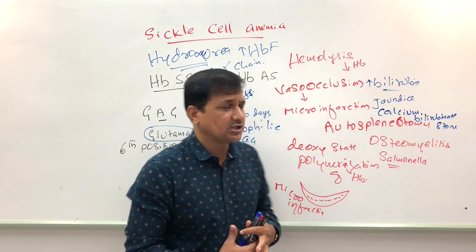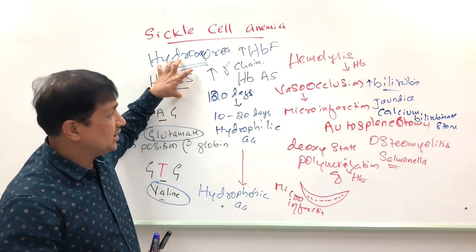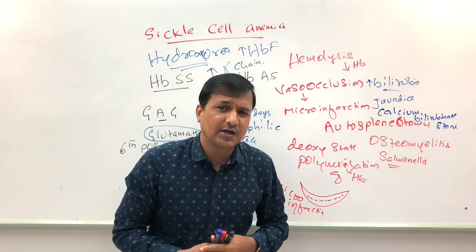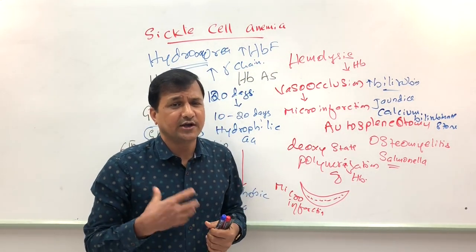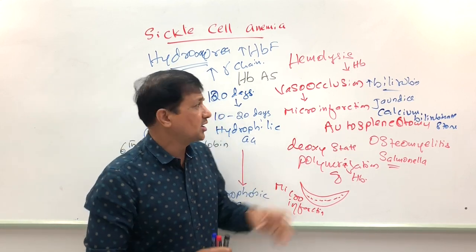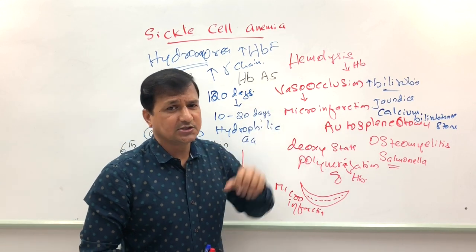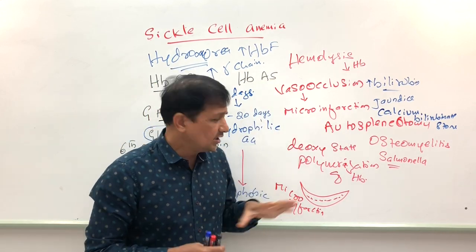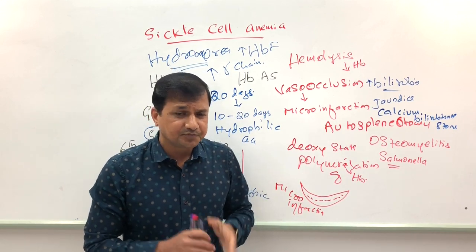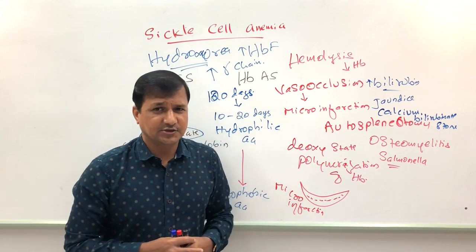In summary, sickle cell anemia is the homozygous condition (HbSS). In the heterozygous condition (HbAS — sickle cell trait), patients are generally asymptomatic with no significant clinical signs or symptoms, because one beta chain is normal and the other is abnormal, so sickling rarely occurs. This concludes the discussion of sickle cell anemia.